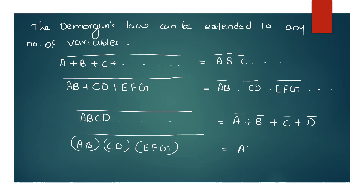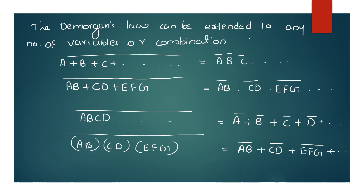We extend: A B complement, plus C D complement, plus E F G complement, etc. If you have a number of variables, we extend A B C D complement, plus E F G complement, etc. Randomly, combinations of variables are related.